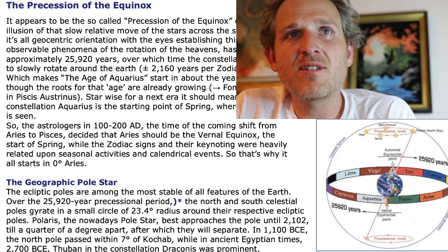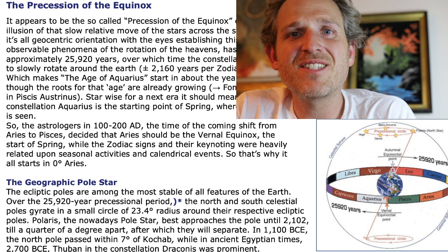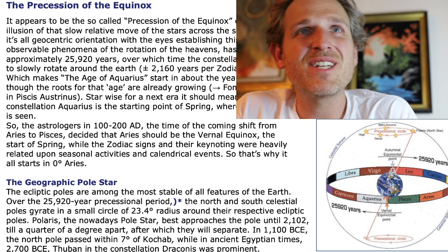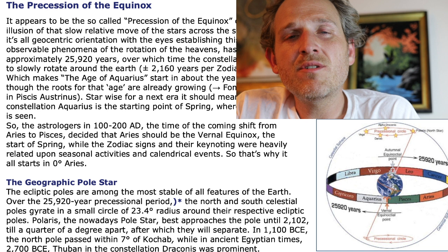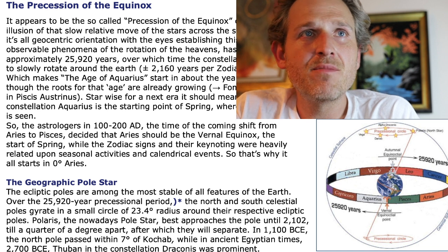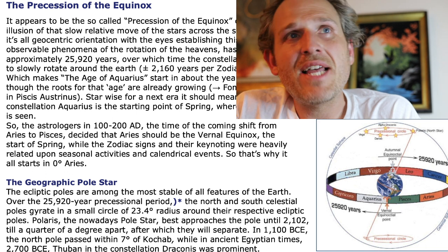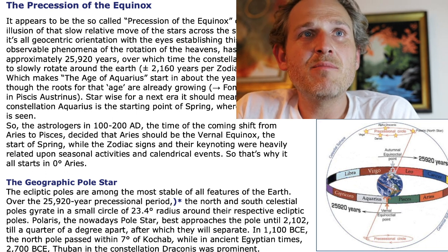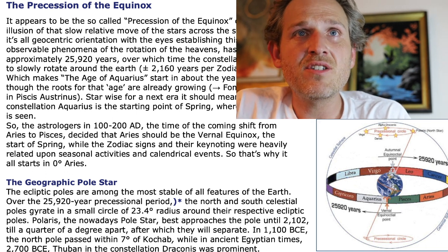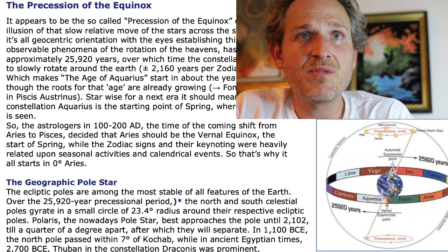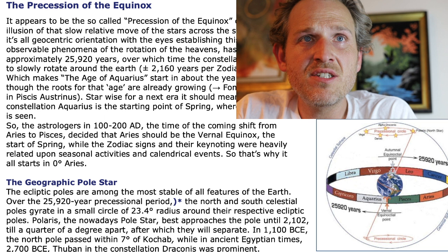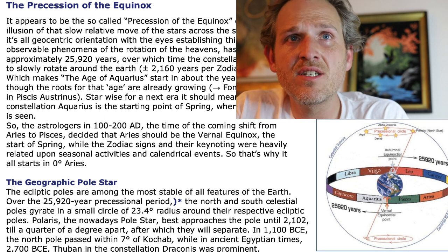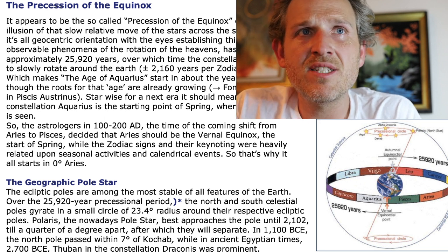So Aquarius becomes the starting point for spring in the new era — that's the Age of Aquarius, now it makes sense. So the astrologers in 100 to 200 AD, at the time of the shift from Aries to Pisces, decided that Aries should be the vernal equinox at the start of spring, while the zodiac signs were heavily related upon seasonal activities and calendrical events. That's why it all starts at zero degrees Aries.